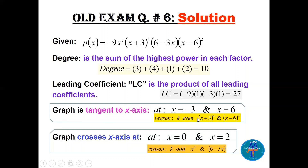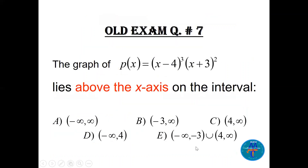Next question: the graph of (x minus 4) cubed times (x plus 3) squared — is it above the x-axis? Choose the correct answer. You have to sketch it roughly. The function is already factored, so the zeros are directly x = 4 and x = −3. The degree is 5 with leading coefficient 1, so this behaves like the cubic.